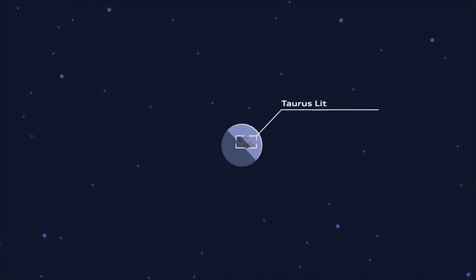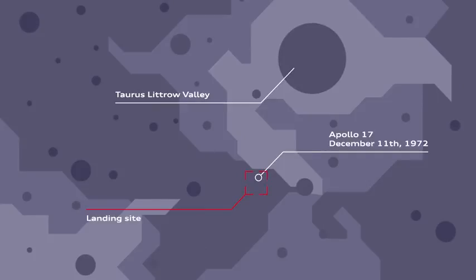PT scientists chose the landing site years ago, the Taurus-Littro Valley near the Apollo 17 landing site, an area well known by scientists and lunar explorers.